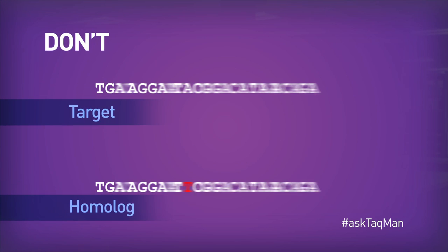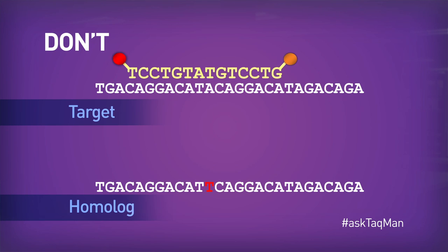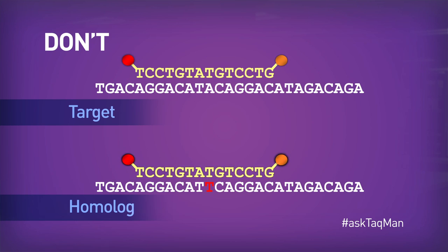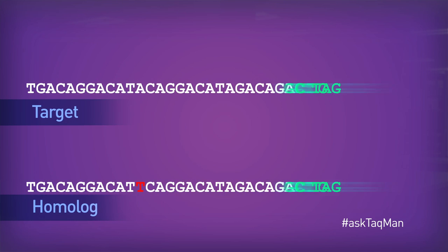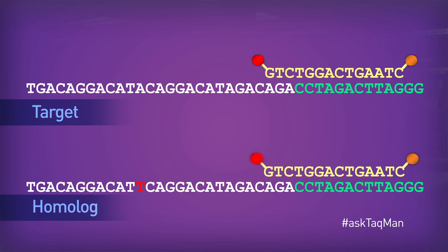Third, be careful about designing to sequences that aren't unique. Be especially mindful of homologues, which often differ very little from the sequence of interest and might therefore cause erroneous signal. Try to always design at least one oligo to a region that's unique enough so that your assay won't give unwanted signal.